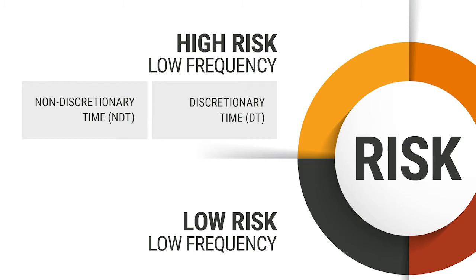I don't worry about the bottom left box because that's low risk — even if it goes bad, the consequences are de minimis. Where I worry for you, where I worry for everybody, is in the top left box. When good people get involved in high-risk, low-frequency events, you are much more likely to make a mistake. Not every mistake will end in tragedy, but if you make enough mistakes, sooner or later all the holes in the Swiss cheese get lined up.